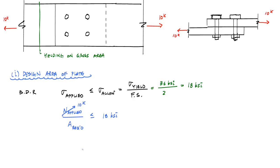So this is 10 kips. And I can solve for the area that I need or the cross-sectional area that I need for my plate in order to satisfy the basic design relationship. So in this case, this would become that the area required is greater than or equal to 10 kips divided by 18 KSI, 0.56 inches squared.